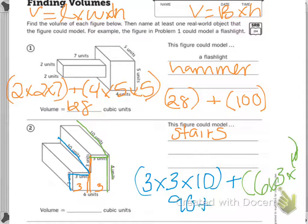Plus, 6 times 3 is 18 times 10 is 180. Plus 90 is 270 cubic units.